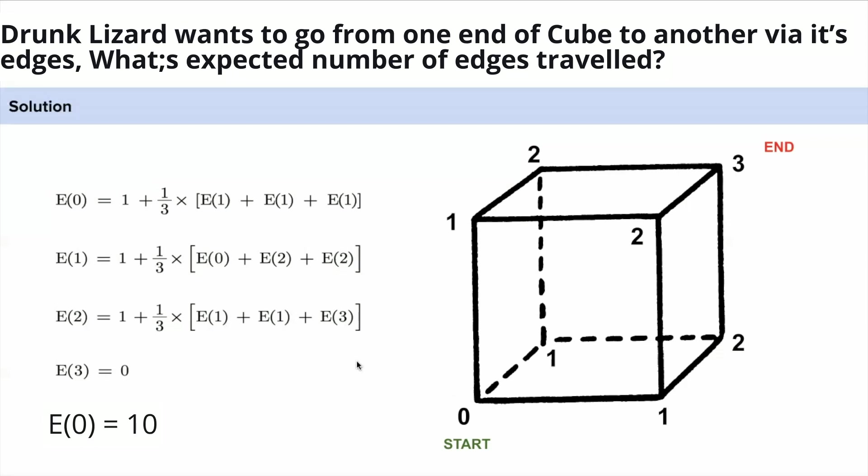This is a set of linear equations. We can solve the linear equations and we will get E(0) to be 10. So on average the lizard has to walk over 10 edges to reach from point zero to point three which is the other end of the cube.